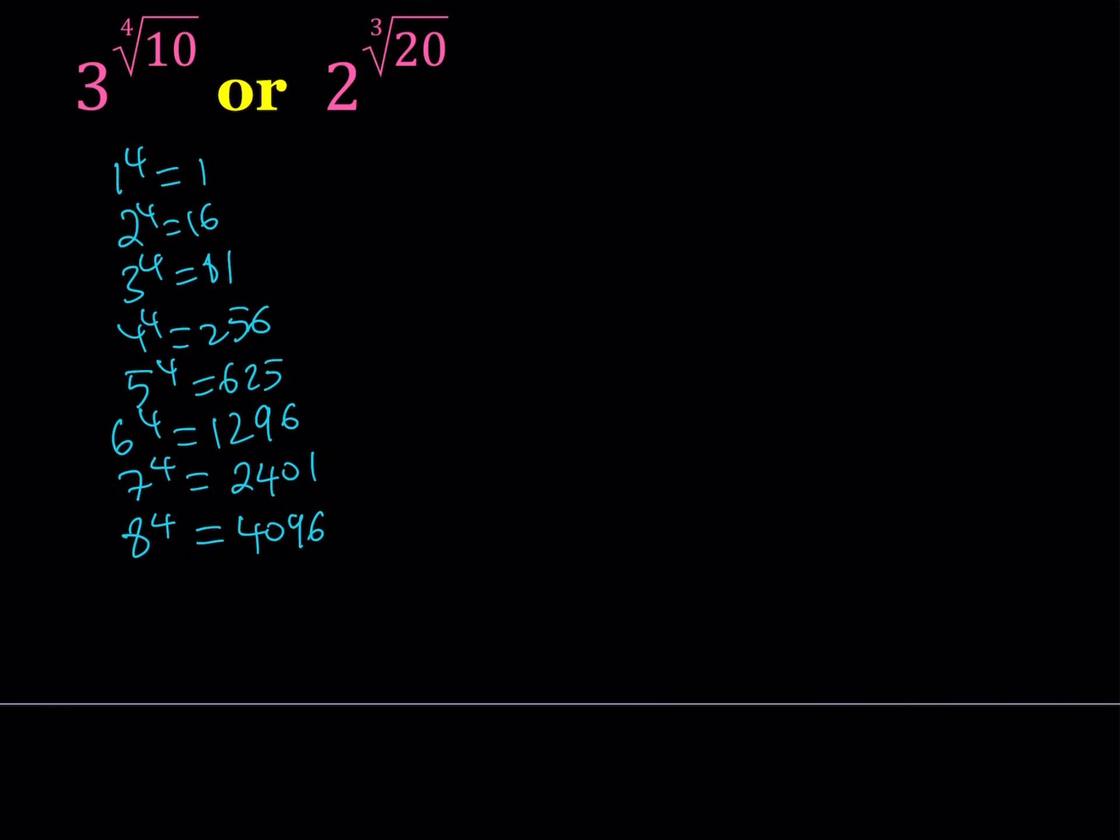These are the 4th powers and then let me list the cubes. The cubes are going to go like this: 1 cubed is 1, 2 to the 3rd power is 8, 3 to the 3rd power is 27, 4 to the 3rd power is 64, 5 to the 3rd power is 125, 6 to the 3rd power is 216.